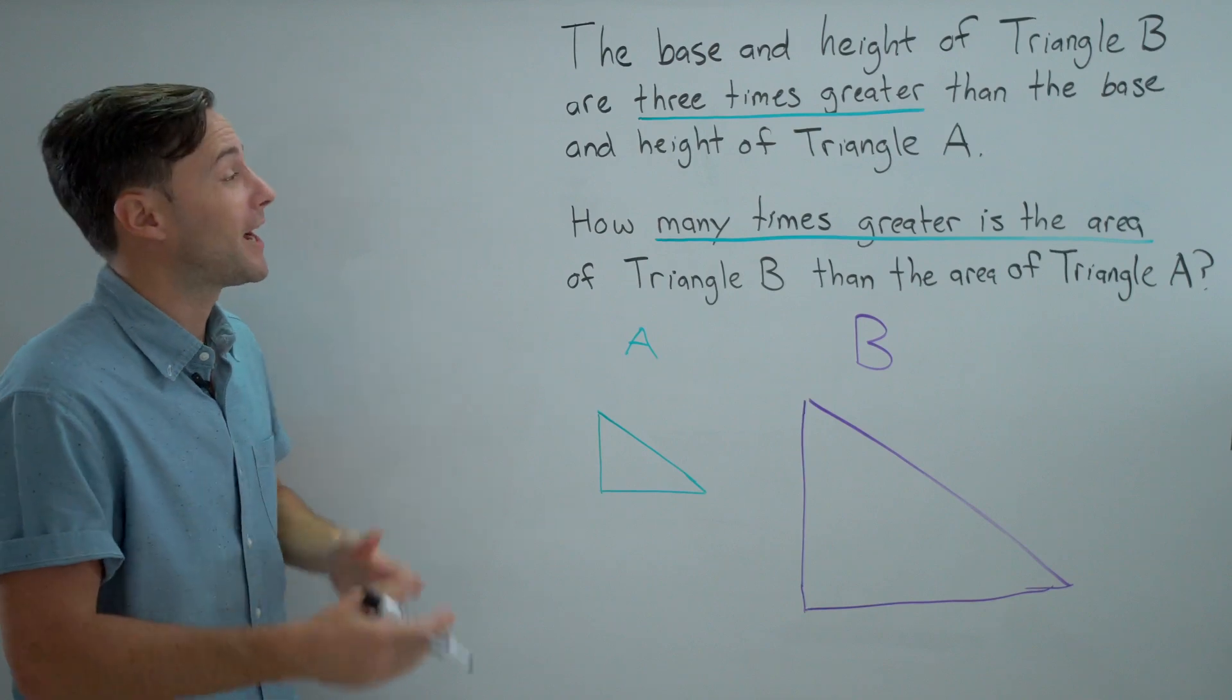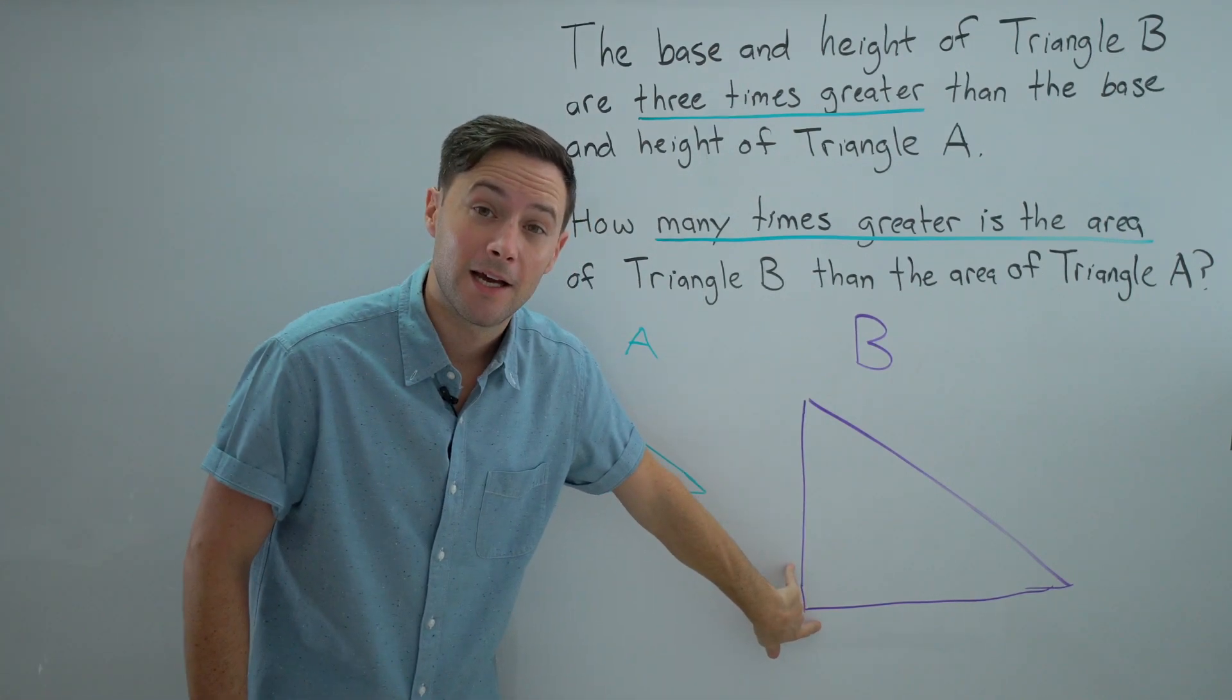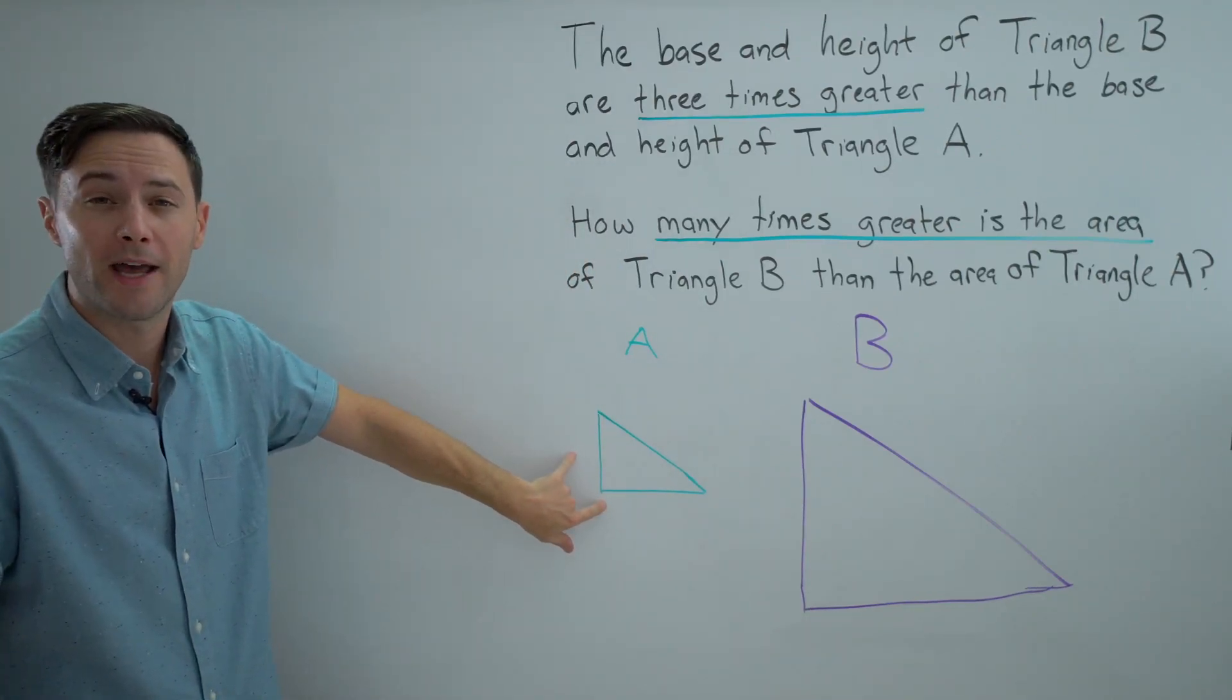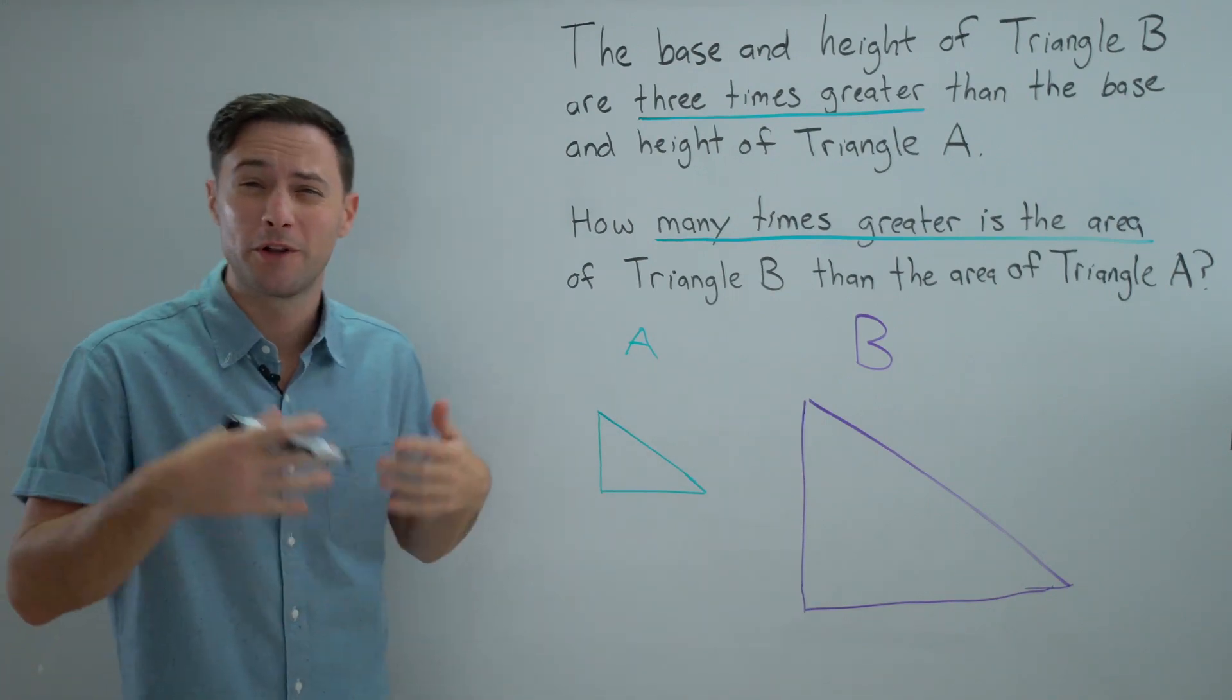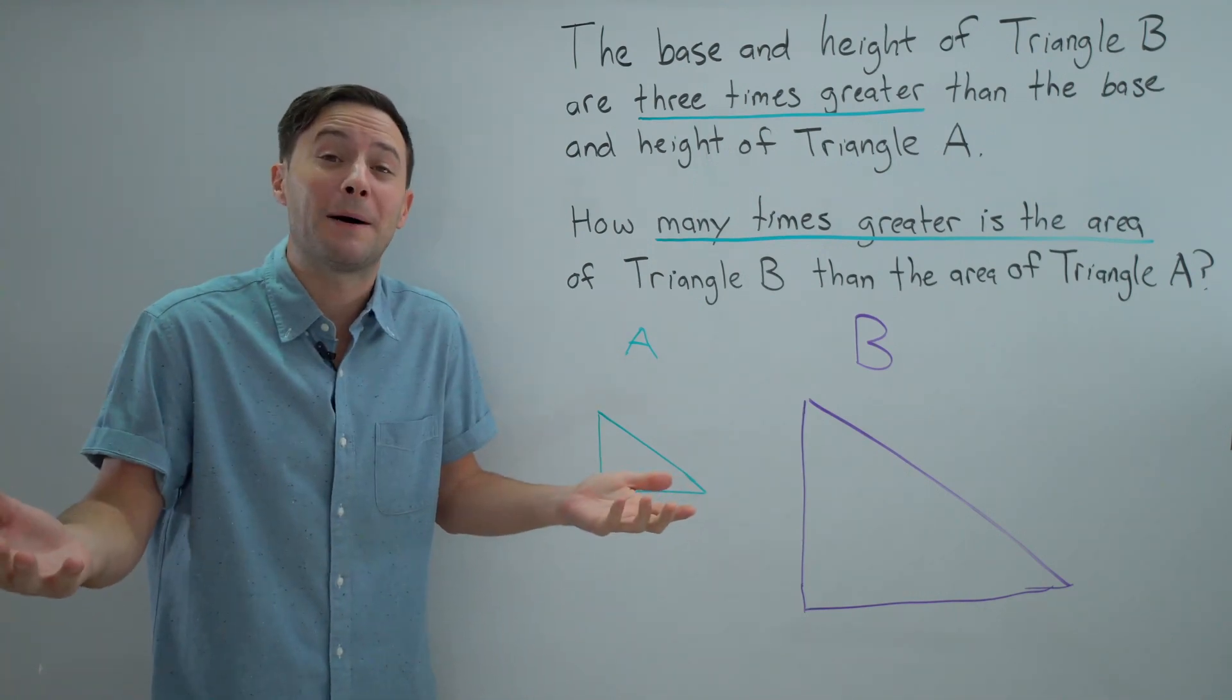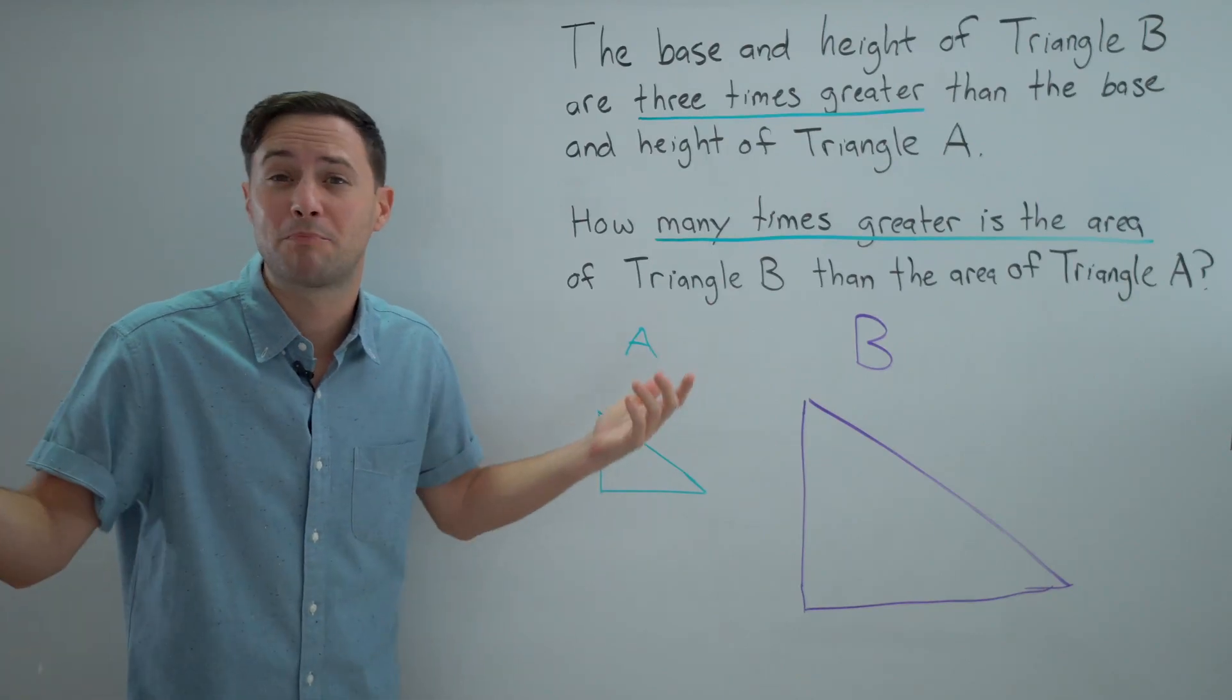So now let's see if we can figure it out. We know that the base and height of triangle B are three times greater than whatever they are for triangle A. Unfortunately, they don't tell us what the base and the height are of triangle A. And any time we have problems like this that are really vague, that don't give you very much information, just make it up. So let's just pick some numbers.